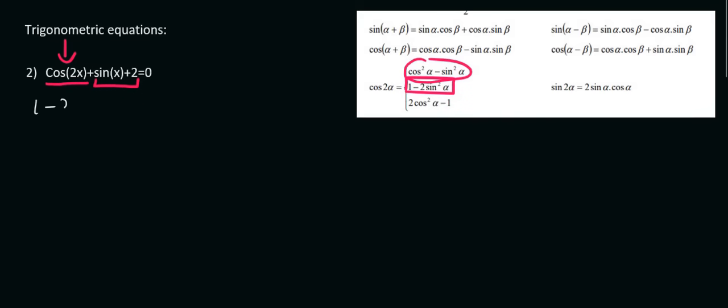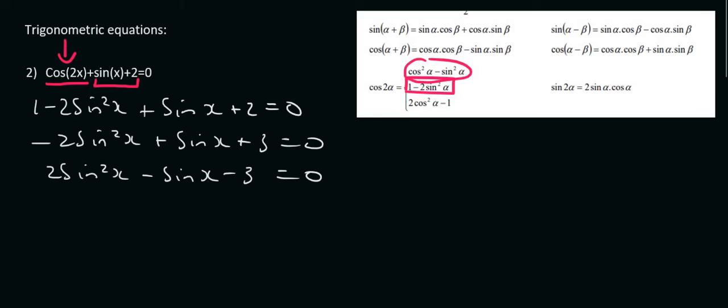So it'll be 1 - 2sin²(x) + sin(x) + 2 = 0. Now we have the nice trinomial. We just have to simplify it a little bit. I'm then going to divide by a negative. Then you can try to factorize it. I like to just use the quadratic formula. What you're going to end up with is that sin(x) = -1, or sin(x) = 1.5. Those each become their own question.